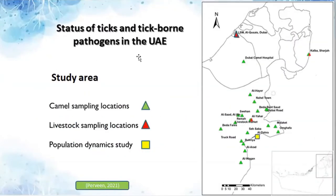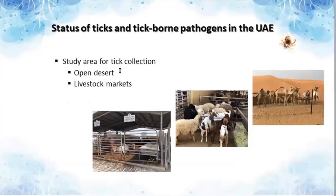I will now move toward the status of ticks and tick-borne pathogens in the UAE. In the UAE, we collected samples from only three emirates. Our plan was to collect samples from all over the UAE, but due to COVID-19 we were restricted. The green triangles show the camel sampling locations, red shows livestock sampling locations, and the yellow square shows the population dynamics study sites. We collected the first population dynamics data on ticks in the UAE. Our main study areas were of two types: open desert and livestock markets.